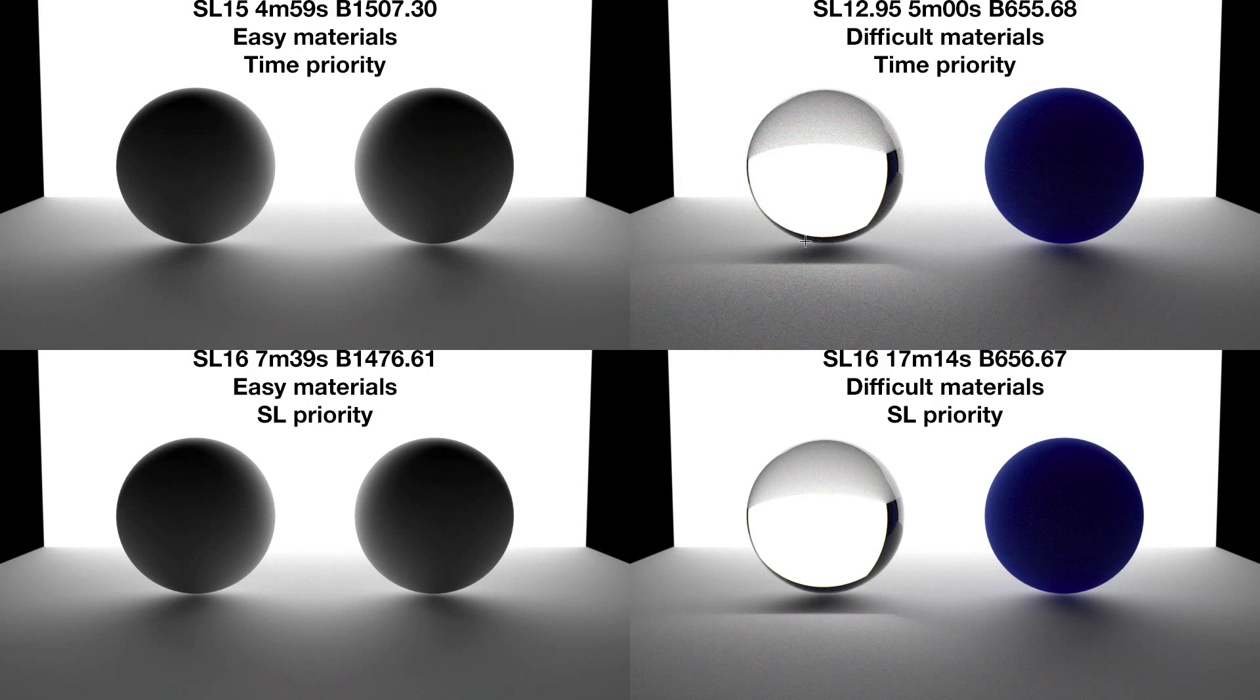The user tells the render engine to stop rendering by defining the maximum time the render is allowed to take, or by defining the maximum sampling level or SL that the image is allowed to reach.